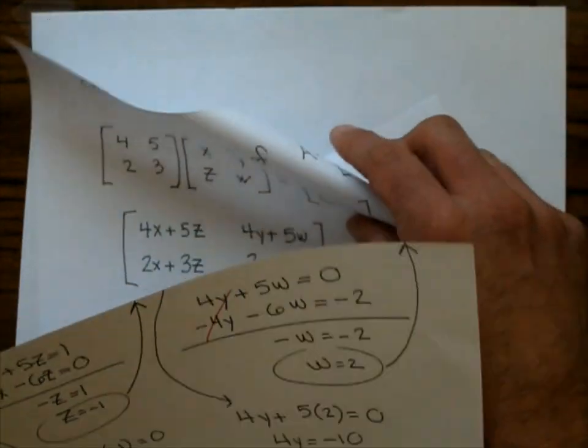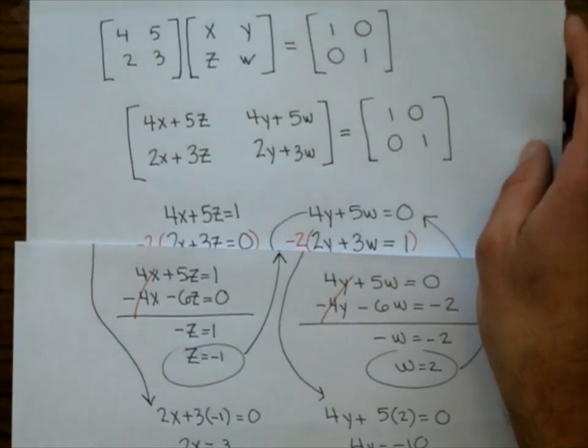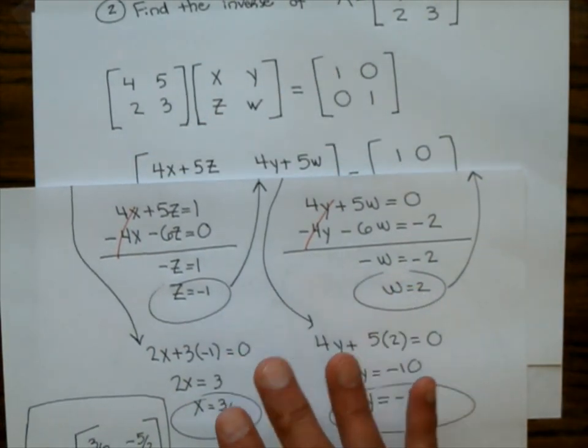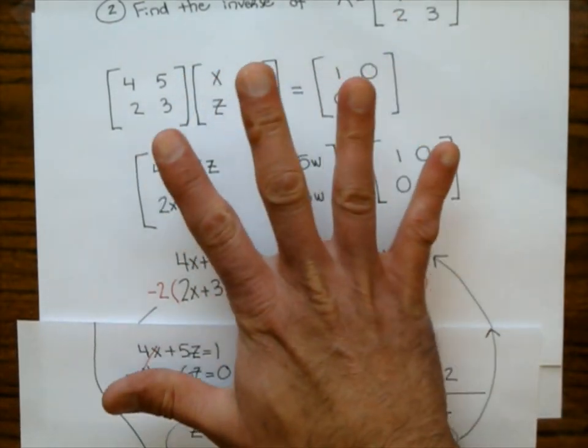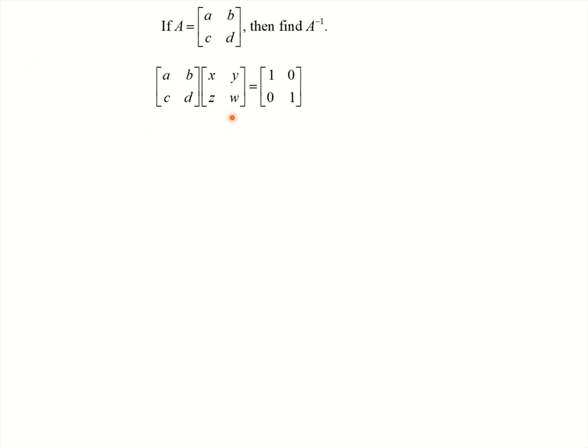This approach was painful. If they ask you to do this in homework it's very painful. So we're going to derive a technique on PowerPoint where you can do this in one or two steps instead. Let A equal the general 2x2 matrix [a, b, c, d], and we want to find the inverse. We don't know what it is, so we call it [x, y, z, w]. We're actually deriving a formula for the inverse of any 2x2 matrix.